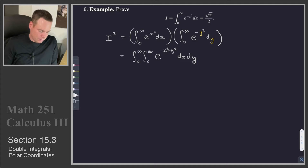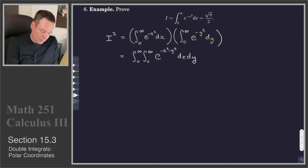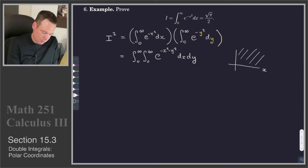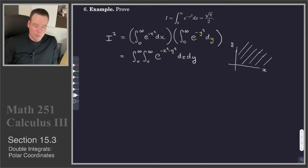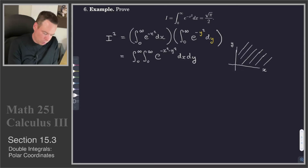Now I've got a double integral. You might say it doesn't look like you made anything simpler — it looks more complicated. Well, as soon as I switch perspective to polar coordinates, I have made it simpler. If we think about what this region looks like in Cartesian coordinates, x and y give us essentially this infinite region — it's the first quadrant. But I could define this region in polar coordinates by r between 0 and infinity, and theta between 0 and pi over 2.